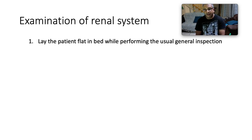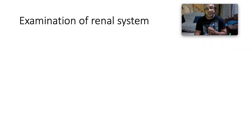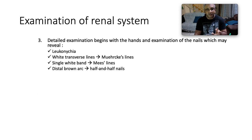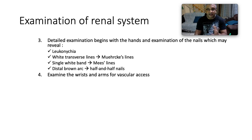When examining the renal system, lay the patient flat and note mental status, sallow complexion, hydration, and any hyperventilation or hiccuping. Detailed examination begins with the hands and nails, which may reveal leuconychia due to hypoalbuminaemia in nephrotic syndrome. You may also see white transverse lines — Muehrcke's lines — a single white band called Mees' lines, and a distal brown arc: half-and-half nails, also called Terry's nails.